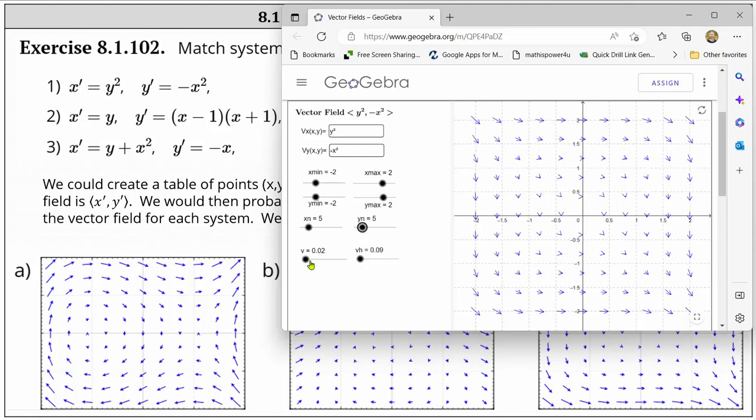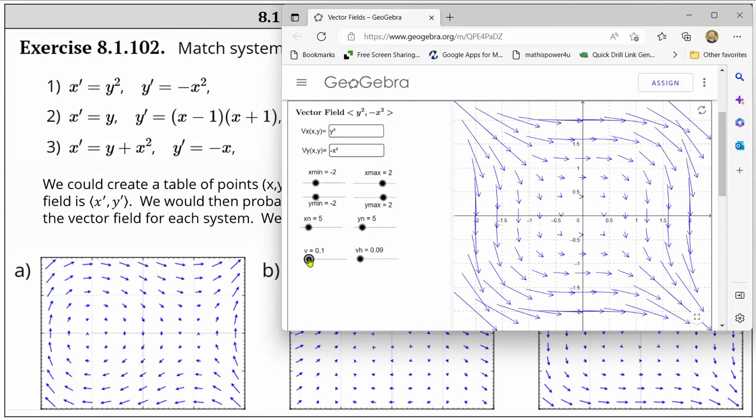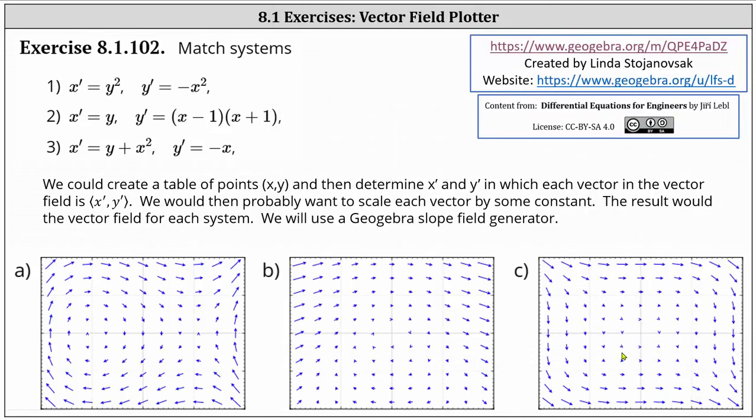And let's also increase v, which will increase the length of the vectors. That looks pretty good. Notice from the slope field, the point (0, 0) is a critical point, where x prime and y prime are both zero. Let's go and look at the given slope fields. Notice this slope field does match slope field c. Number one is c.